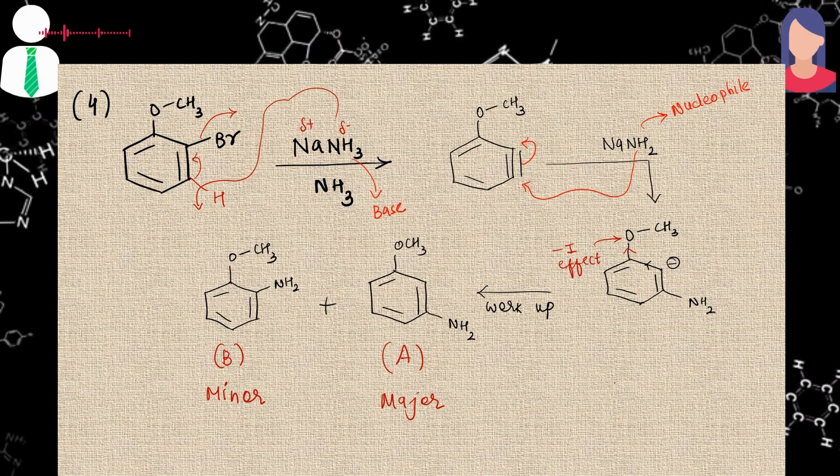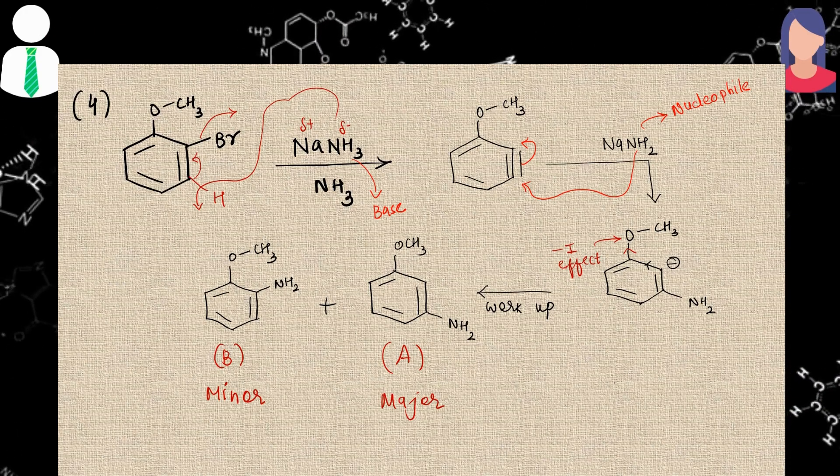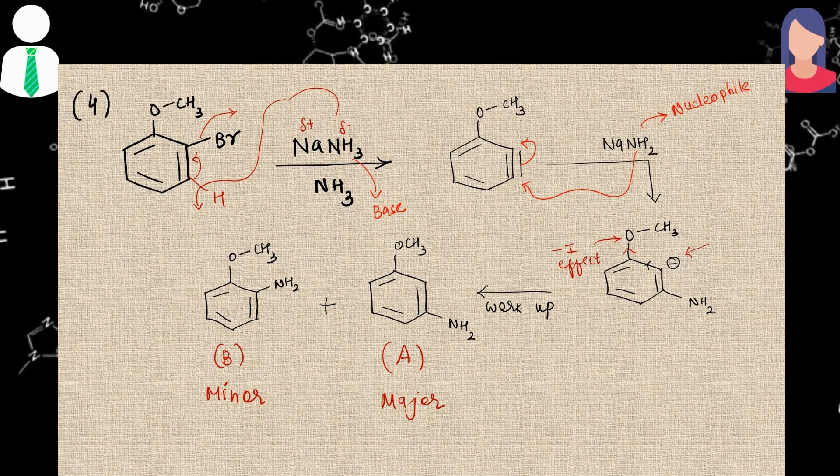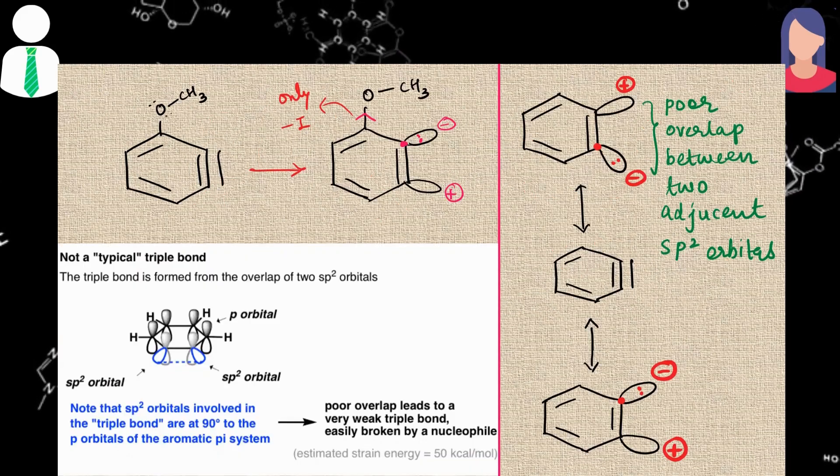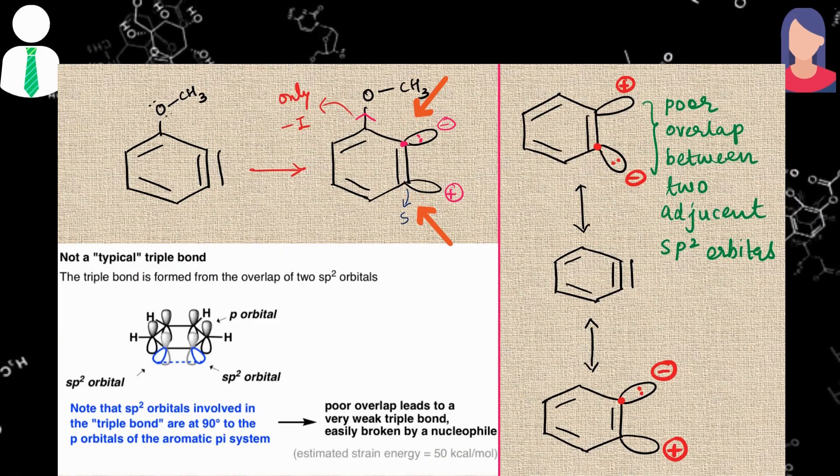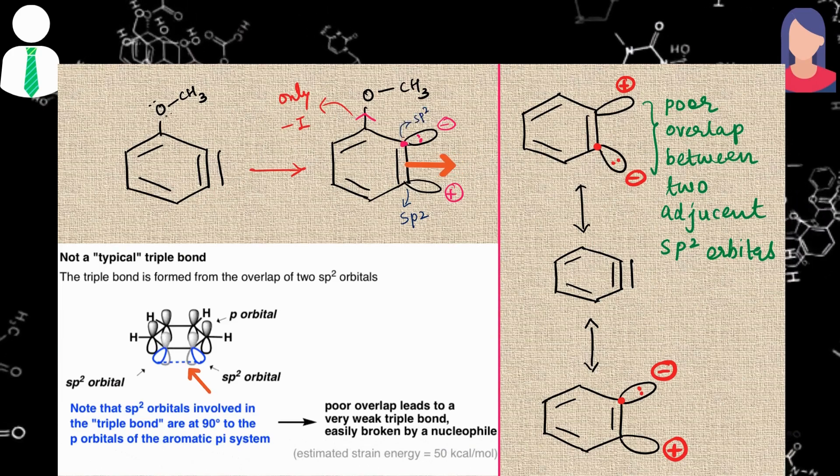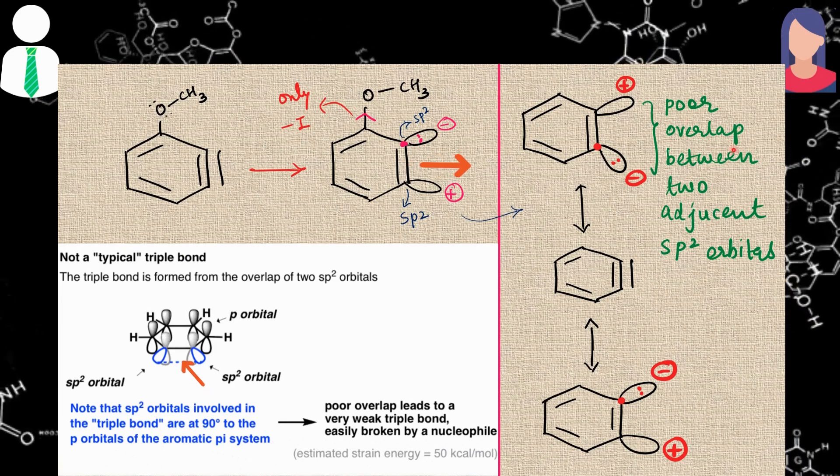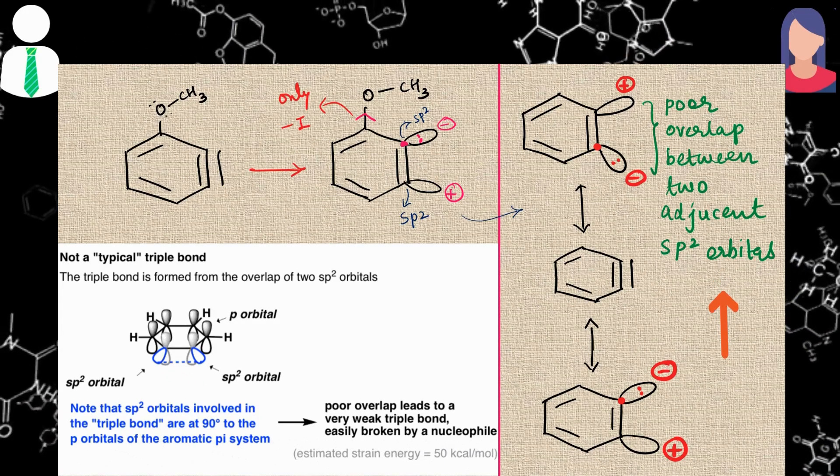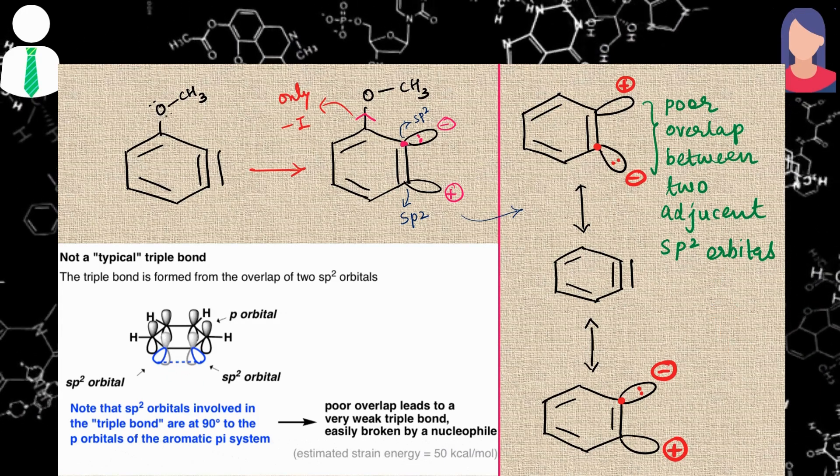But why is mesomeric effect not considered in the benzyne mechanism. I tried to explain these things through the angle strain and all the things, but I wasn't sure about the exact answer. So the answer is simple. This triple bond is created due to the overlapping of these 2 sp2 hybridized carbons. Now in sp2 hybridized carbons, the orbitals of this triple bond are directed slightly away from the ring. Also extent of overlapping is very poor, and that is why resonance is not possible. So only inductive effect is considered in the benzyne. And that's how my interview was ended.